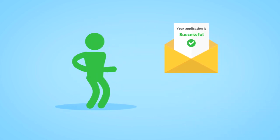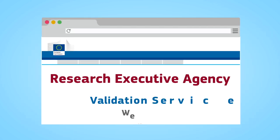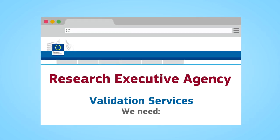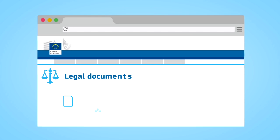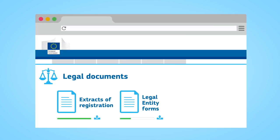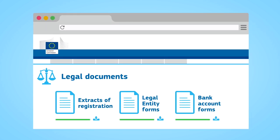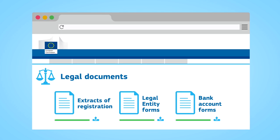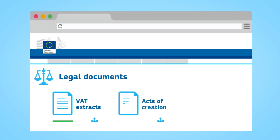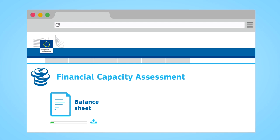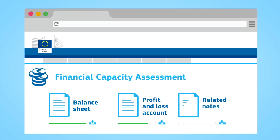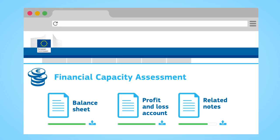Let's say you've been successful in your application. The validation services will now contact you through the register. They will ask for your legal documents, which you'll need to upload. These documents include extracts of registration, legal entity forms and more. On top of this, some of you may need to upload extra documents for the financial capacity assessment.